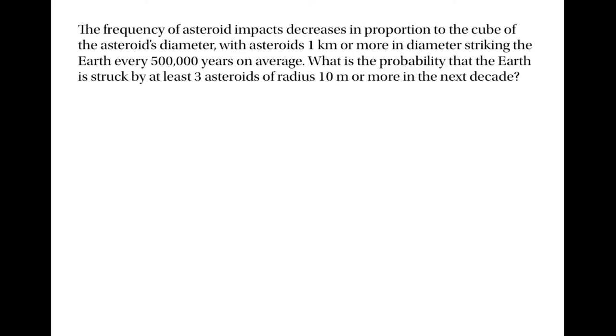Well, first of all, it helps to convert the figure of one asteroid every 500,000 years into a rate. And the rate will be one divided by 500,000 years, which is 0.000002 per year. So asteroids of diameter one kilometre or more strike at the rate of 0.000002 per year. What about asteroids of diameter one metre?